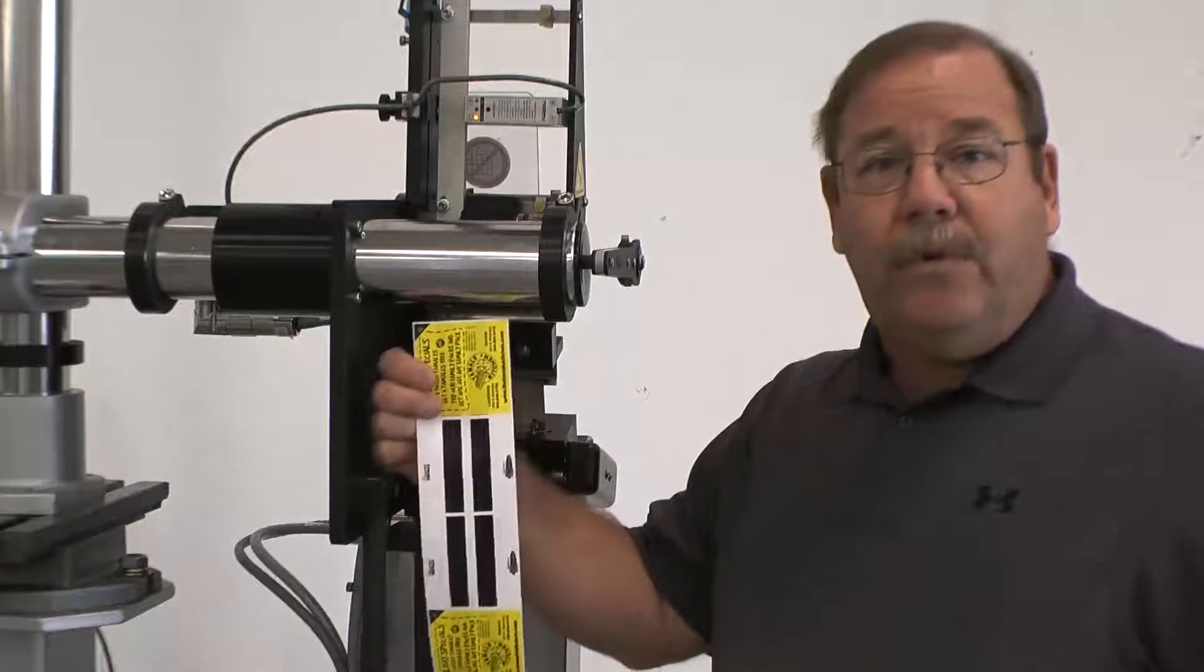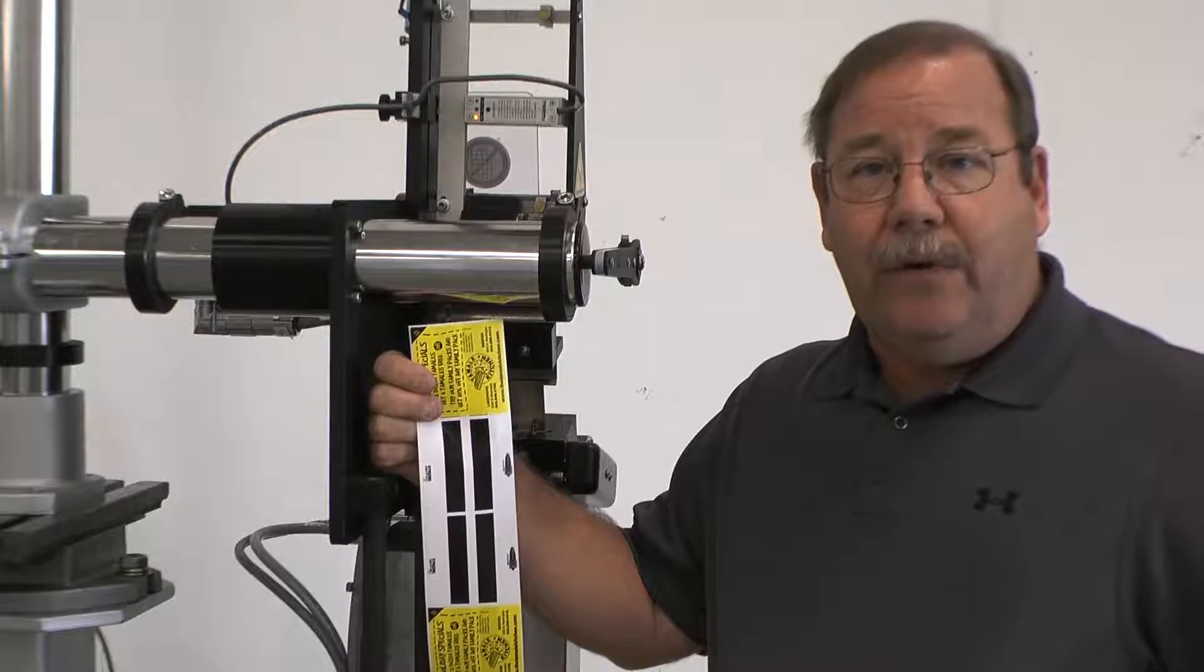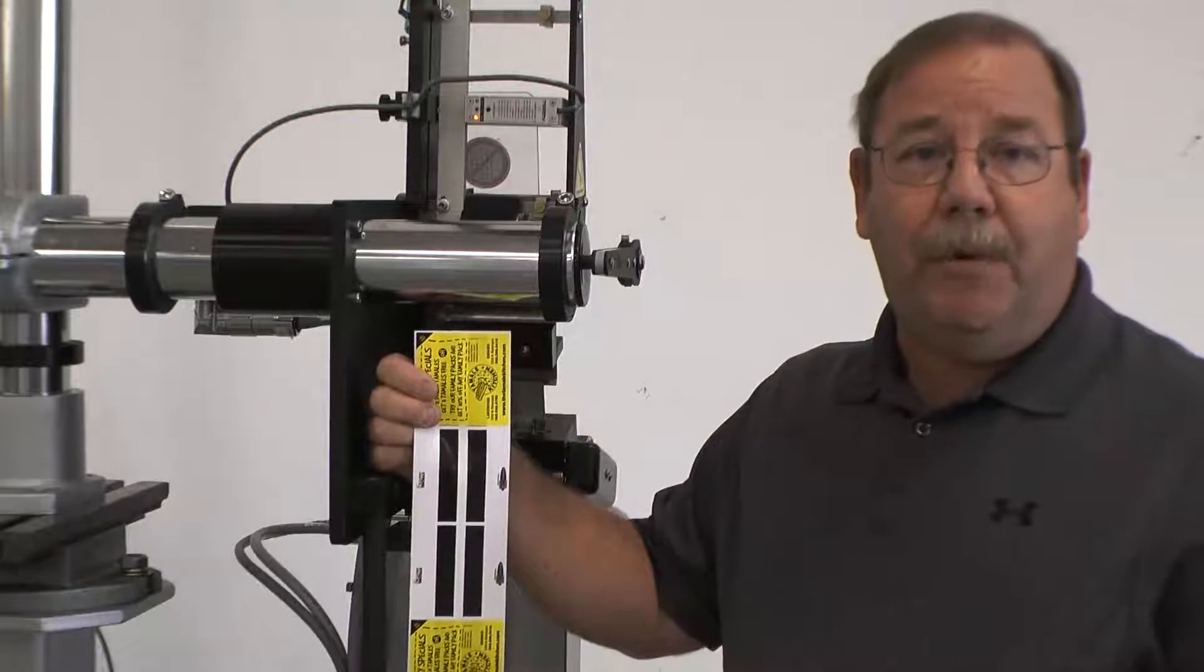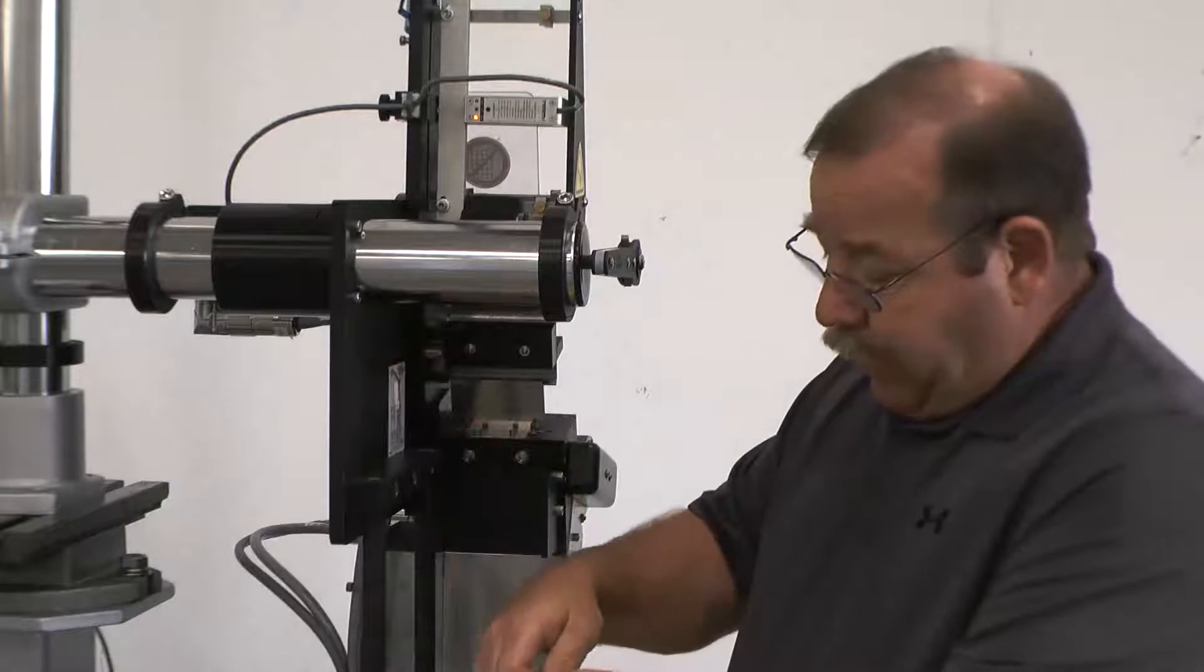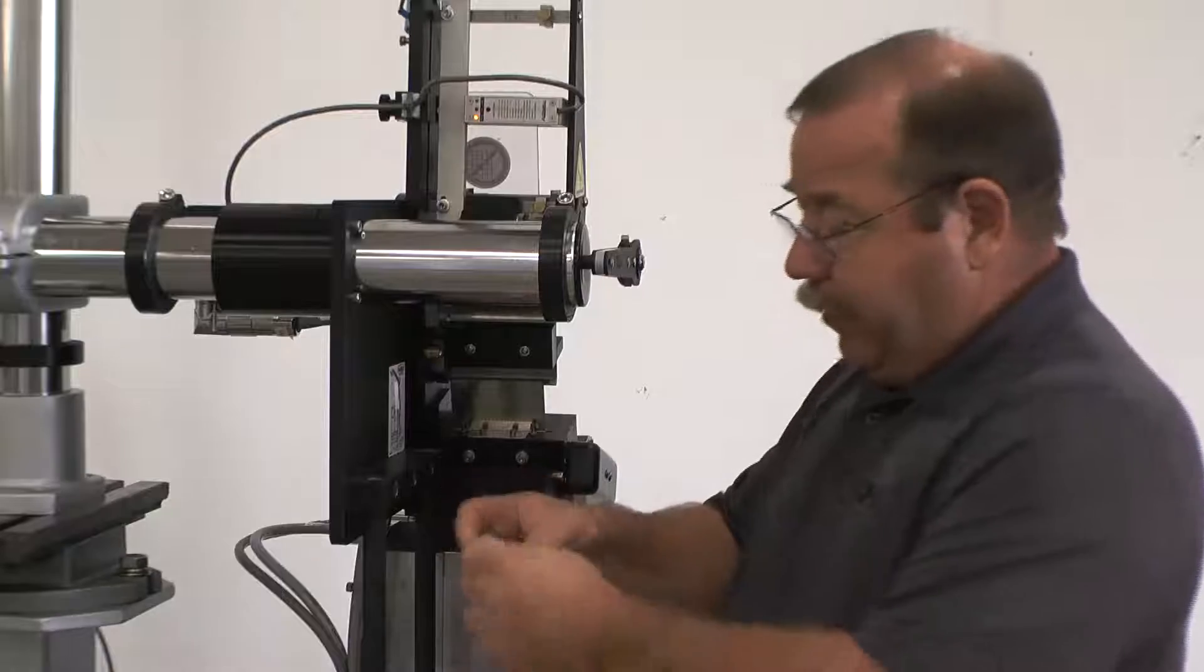If you have material with the black bars printed on it, the procedure is slightly different. First, you want to remove all of the label material from the labeling head. You then want to tear just a portion of the backing paper.